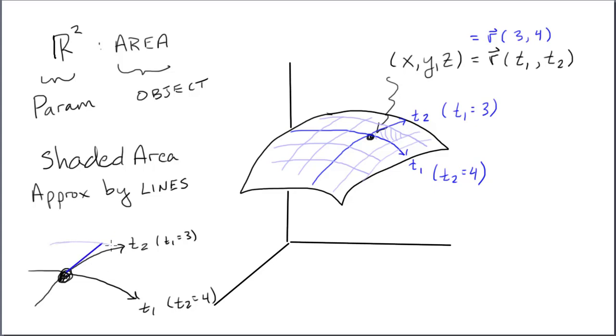So I'm going to vary T2 by DT. That gives me another grid line, which gives me a little tangent line piece. Just like we did in the last video.